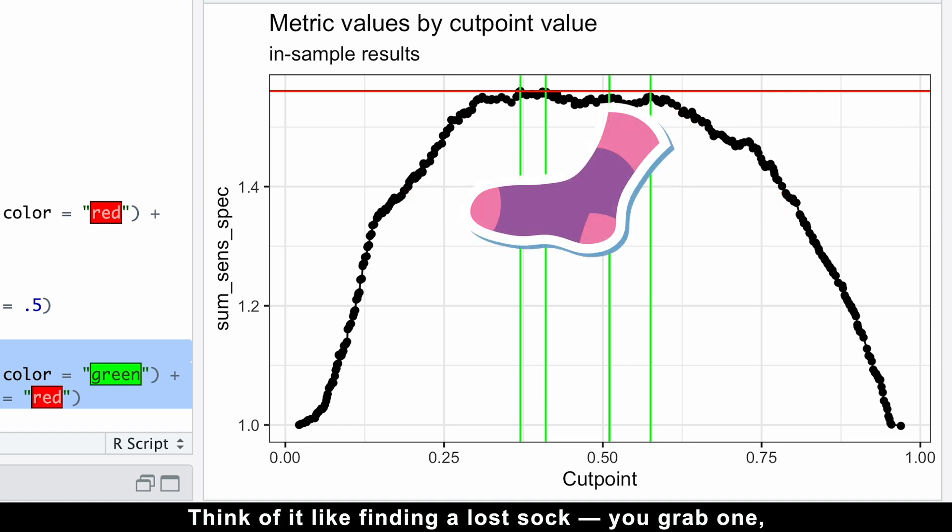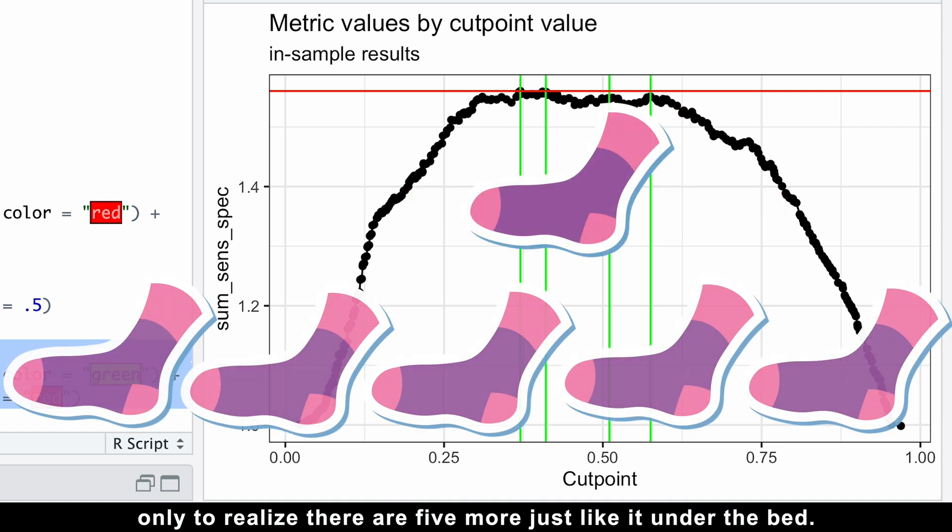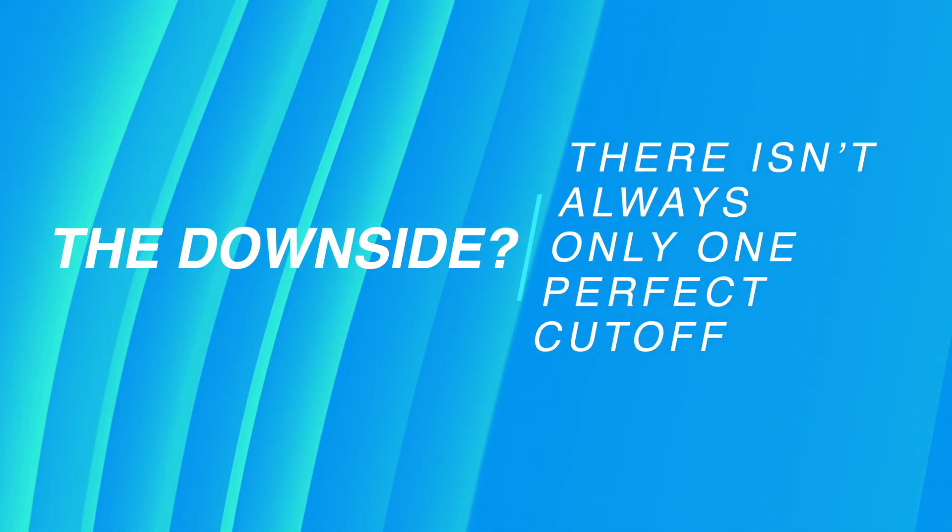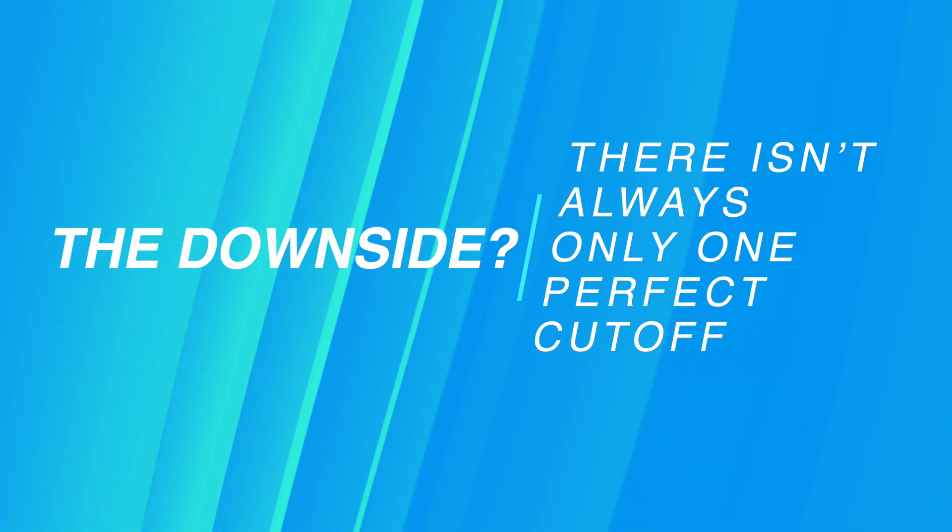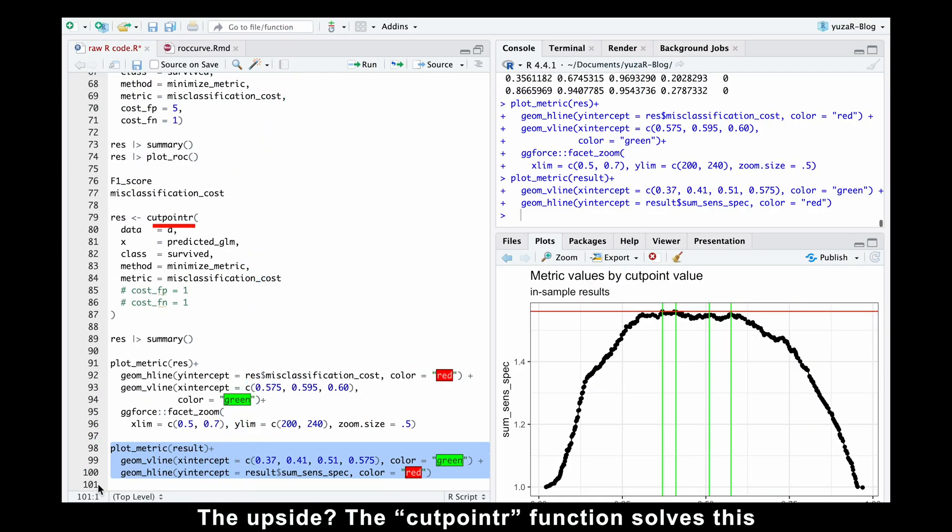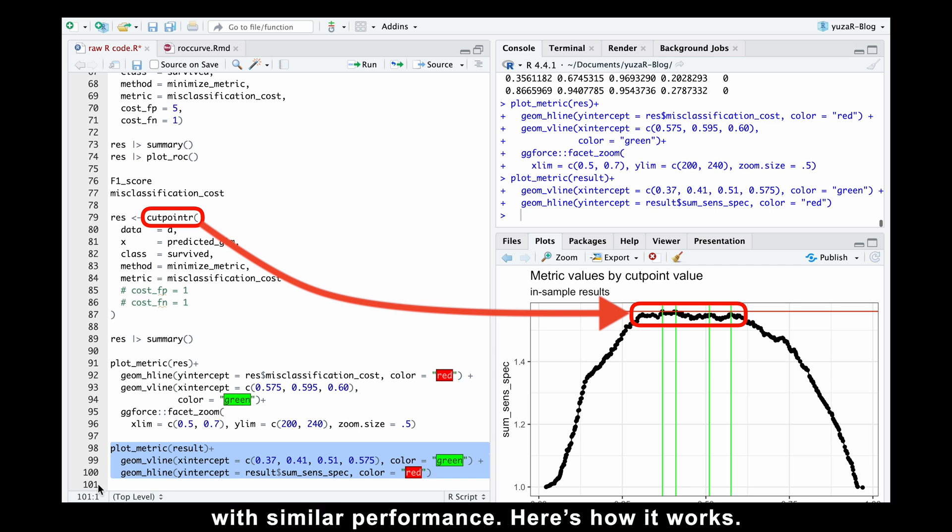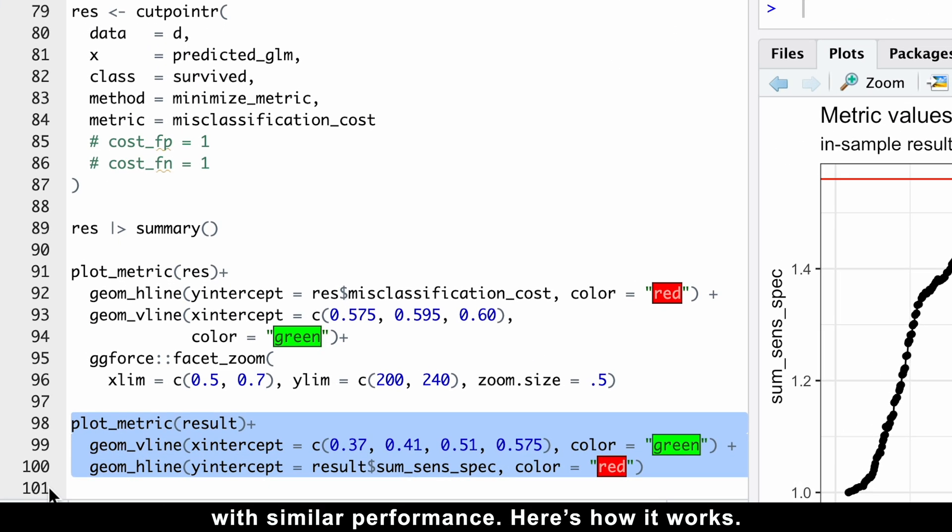Think of it like finding a lost sock. You grab one, only to realize there are five more just like it under the bed. The downside? There isn't always only one perfect cutoff. The upside? The cutpointr function solved this by allowing us to find a range of cutpoints with similar performance.